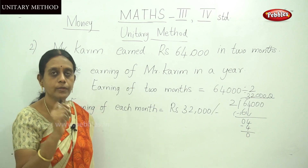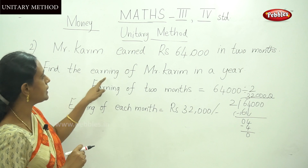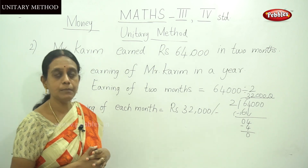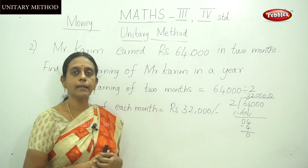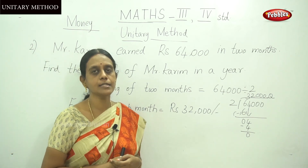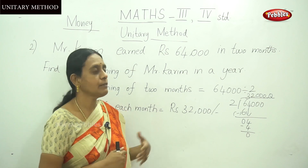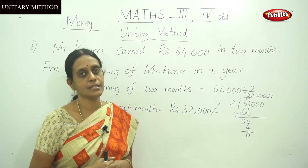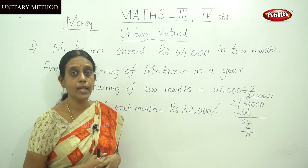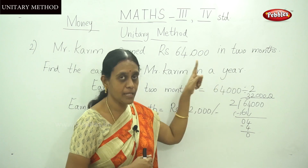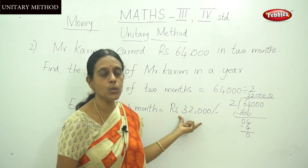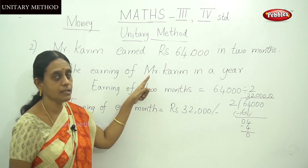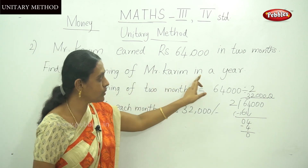We found the value of each month. Next, find the earning of Mr. Kareem in a year. One year equals 12 months — we have already discussed the time topic in our previous video. So to find the yearly earning, multiply 32,000 by 12.